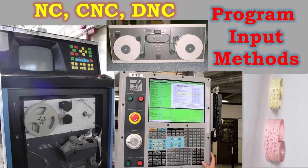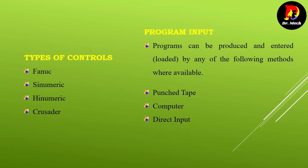Welcome. In this video you can understand program input methods of numerical control machines. Types of controls include FANUC, Sinumerik, Crusader, etc. Programs can be produced and entered or loaded by any of the following methods where available: punch tape, computer, and direct input.